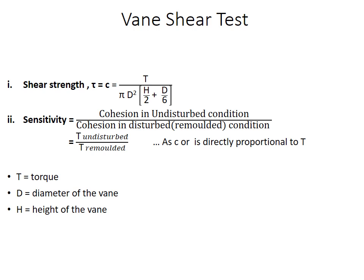So the formula is the ratio of cohesion in undisturbed to the cohesion in disturbed or remolded condition. So as you can see the formula, c is directly proportional to T, so to find out the sensitivity you may not require to find the cohesions, just by knowing the values of T you can find out the sensitivity.